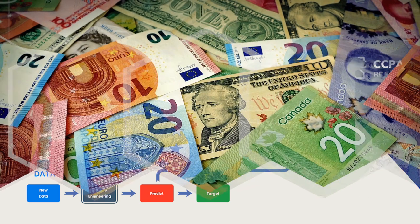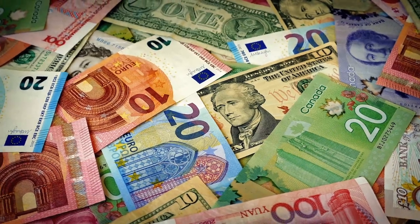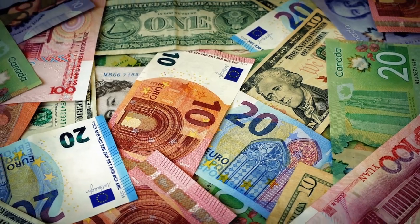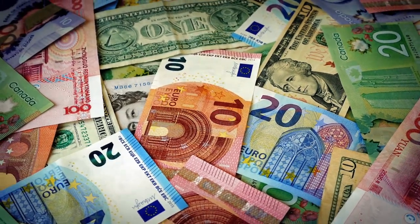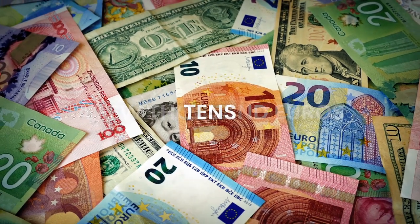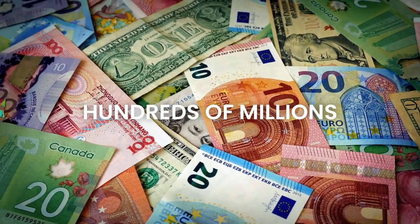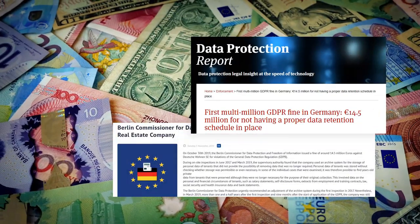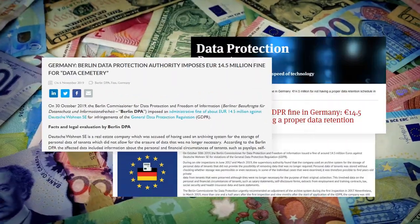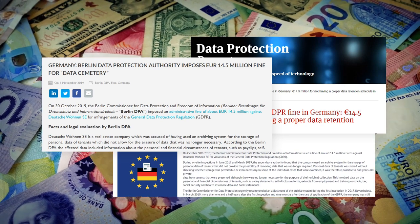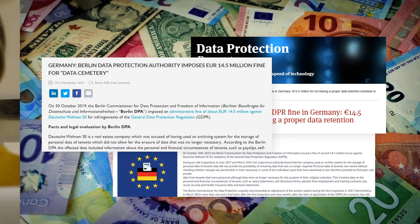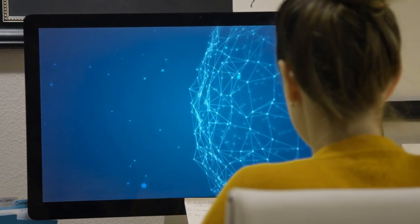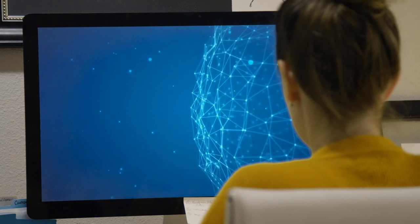Hundreds of fines for the violation of data subjects' rights under GDPR have been imposed by European data protection authorities in the last few years. These fines range from a few thousand euros to tens and even hundreds of millions of euros. This includes a 14 million euro fine to a German real estate company for storing the personal data of its customers indefinitely and without giving them the option to have it removed. But most data scientists are not experts in privacy and do not know how to comply with these complex regulations.